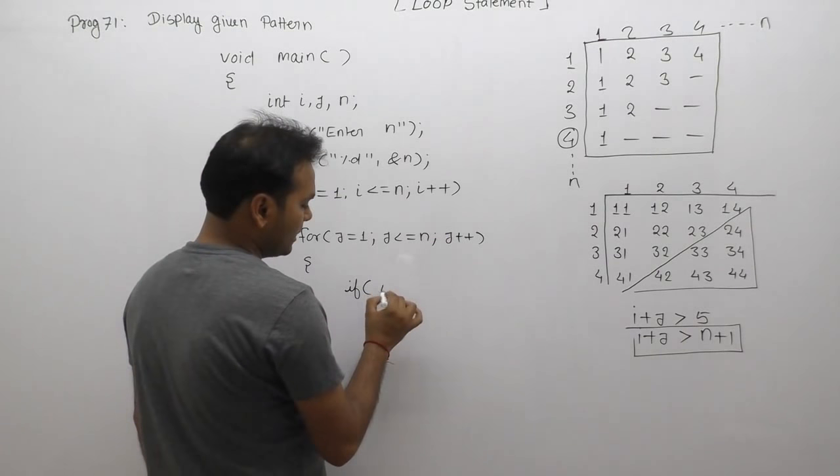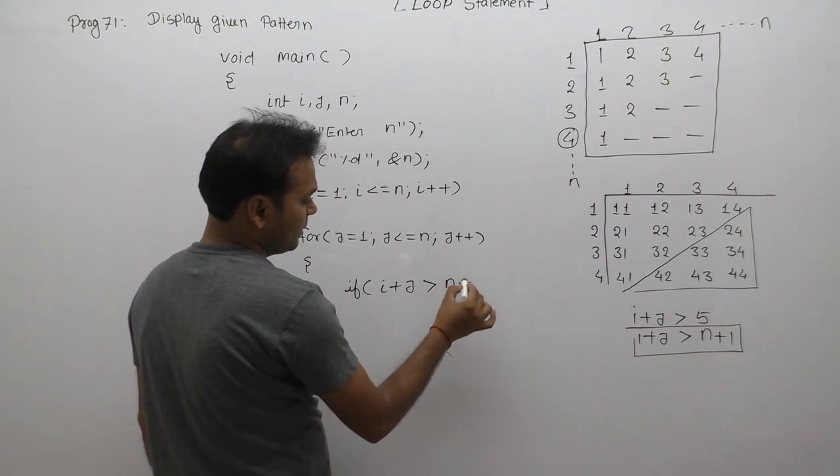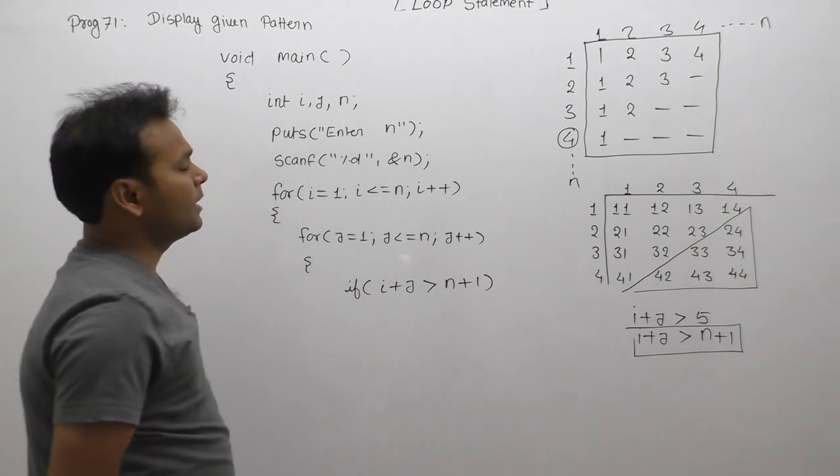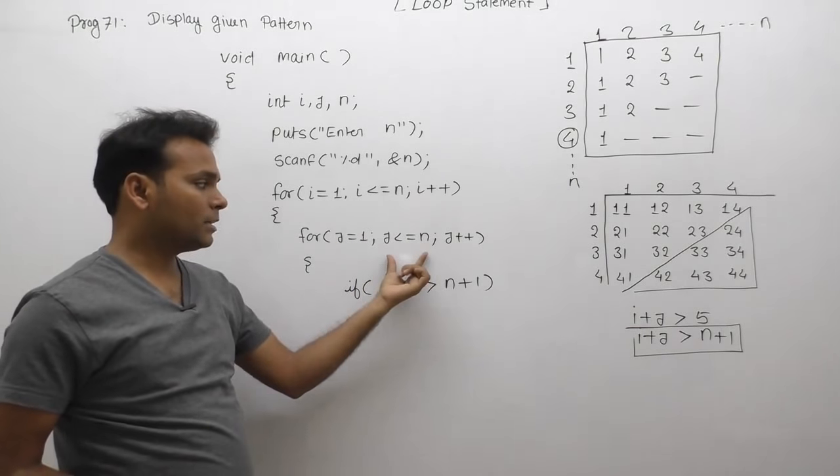First, apply the condition: if i plus j is greater than n plus 1 for any value of n. If n value is 4, the outer loop runs 4 times, and the inner loop also runs 4 times.